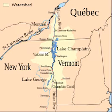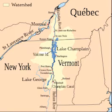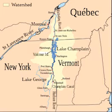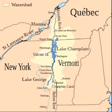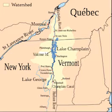Lake Champlain is one of numerous large lakes scattered in an arc through Labrador, in Canada, the northern United States, and the northwest territories of Canada. It is the 13th largest lake by area in the U.S., approximately 490 square miles in area. The lake is 107 miles long and 14 miles across at its widest point, and has a maximum depth of approximately 400 feet.